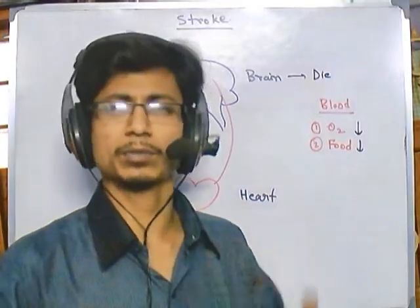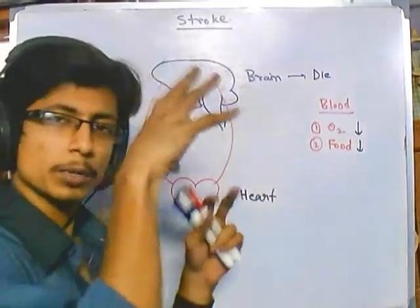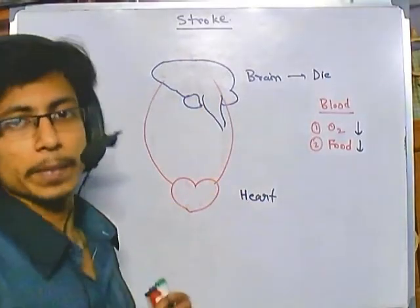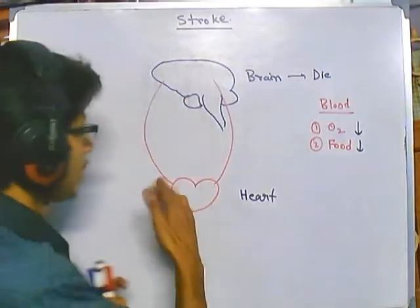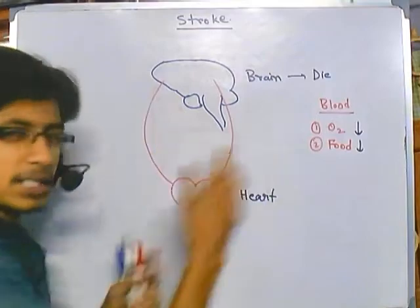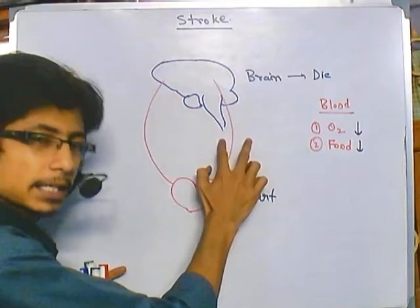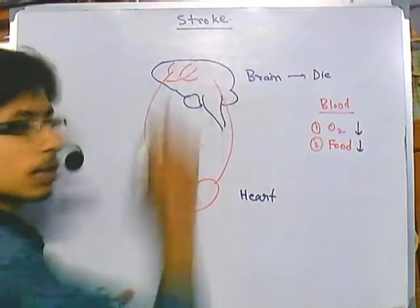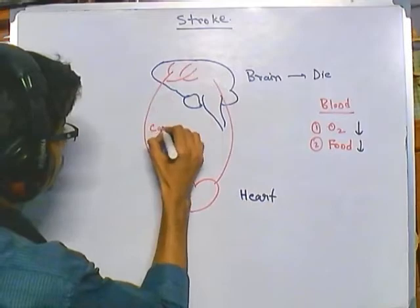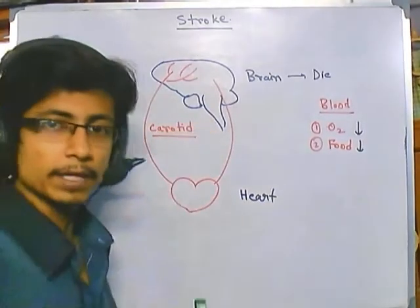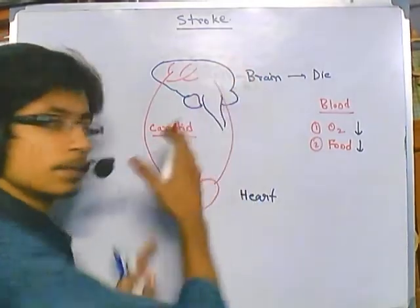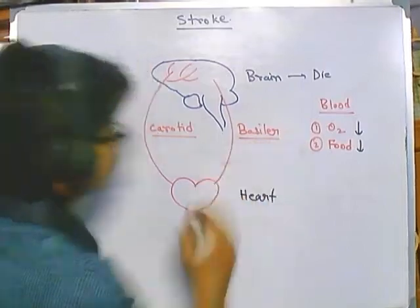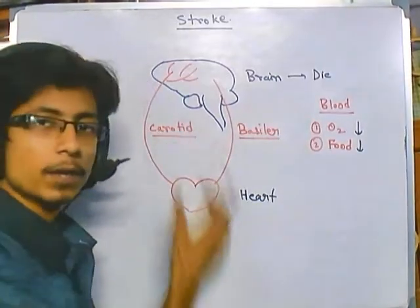When you talk about stroke, there are certain different types, but mainly we will be focusing on brain stroke because when you say stroke, it is majorly talking about the brain stroke. Usually there are two different pairs of arteries that supply blood to our brain. The first pair, which supplies the frontal and middle brain, is called the carotid artery. The second pair of arteries which supplies blood to the posterior side of the brain is called the basilar artery. These are the two different arteries supplying blood from heart to brain.